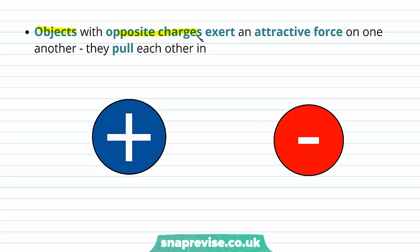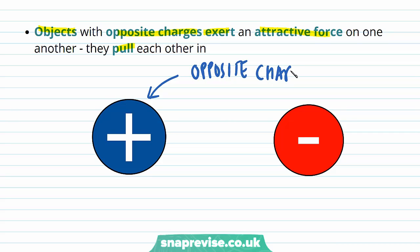Objects that have opposite charges exert an attractive force on one another — they pull each other in. So here we have two oppositely charged particles: one is positive and one is negative, and they're going to experience an attractive force towards each other.